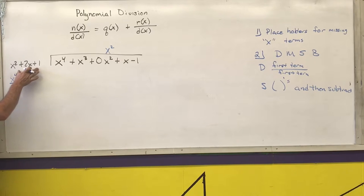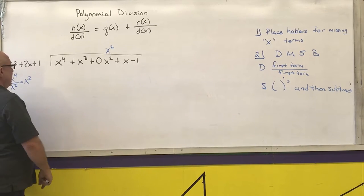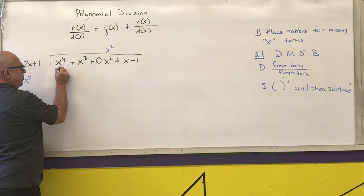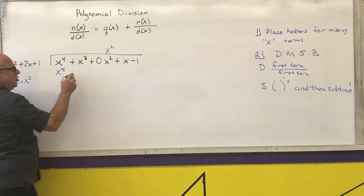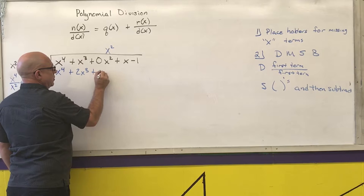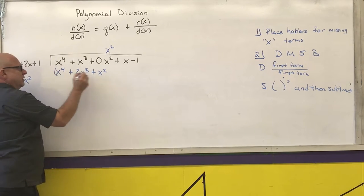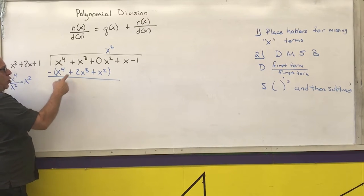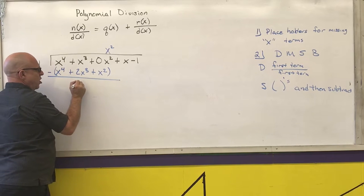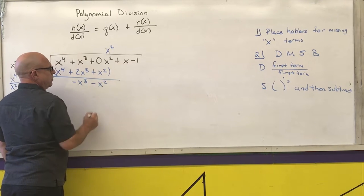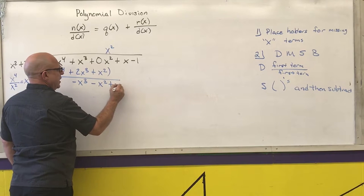Take this x squared and multiply it by the polynomial directly: x squared times x squared is x to the fourth, x squared times 2x is 2x cubed, x squared times 1 is x squared. Put parentheses and subtract: any number minus itself is 0, 1 minus 2 is negative 1x cubed, 0 minus 1 is negative 1x squared. Bring down the rest: plus x minus 1.